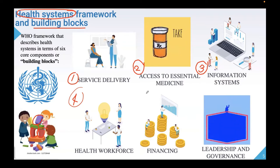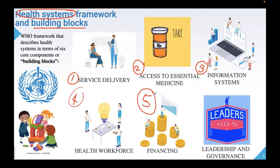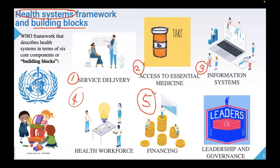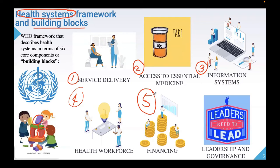Building block number five is financing or health financing. A good health financing system raises adequate funds for health, protects the people from financial catastrophe, allocates resources, and purchases goods and services in ways that improve quality, equity, and efficiency. It is important to have a budget for each and every service or program we implement, as that is where our resources come from. We need adequate funding.